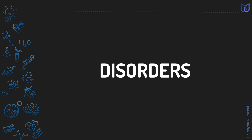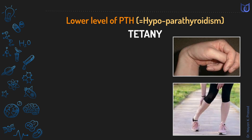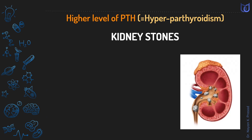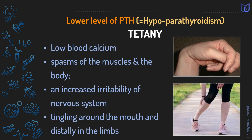Now let us talk about disorders due to parathyroid glands. A lower level of parathyroid hormone causes the disease tetany, characterized by low blood calcium, spasm of the muscles (muscle cramps), and increased irritability of the nervous system. Higher activity of the parathyroid glands causes decalcification of bones, leading to bone deformities and fractures, and also raises calcium levels in blood, causing precipitation of calcium in the kidneys and resulting in kidney stones.